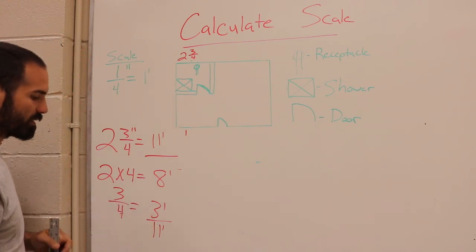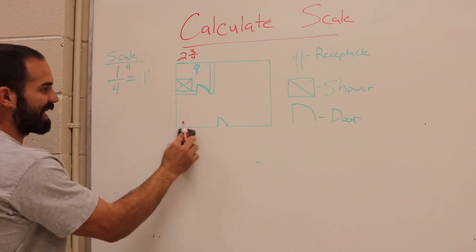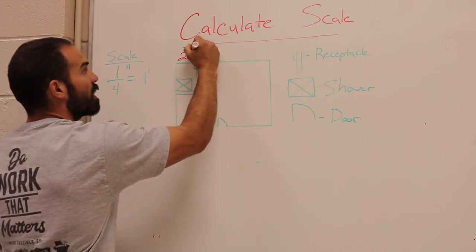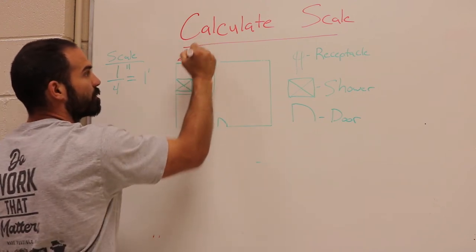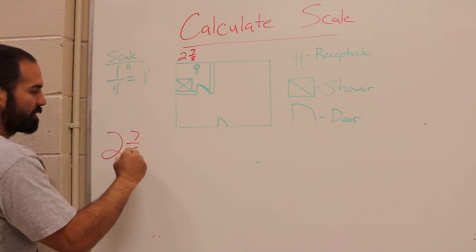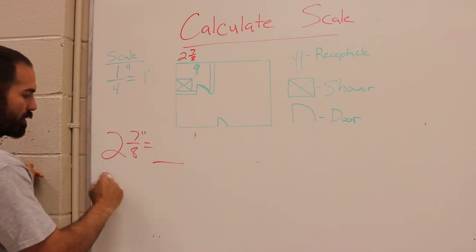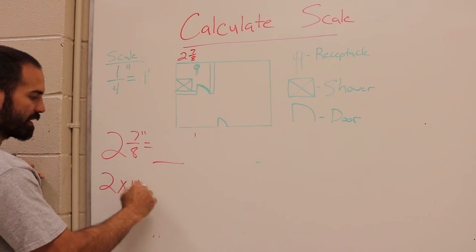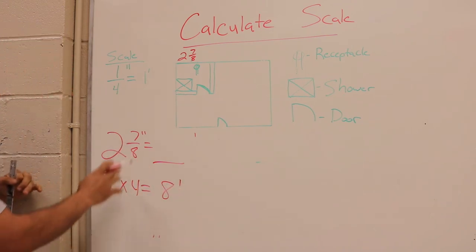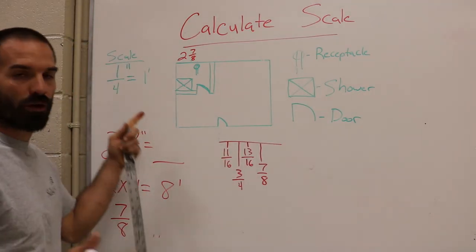Okay, let's say hypothetically we got an odd measurement. Let's say we got a measurement that doesn't exactly line up. Let's change this to 2 7/8 inches. We would start out the same as we did before: 2 7/8 inches equals blank feet. We'll start out with the whole number: 2 times 4, we just did this, we know is 8 feet. Now let's go to our increments. We're trying to convert 7/8 into scale. We've got a quarter of an inch equals a foot.